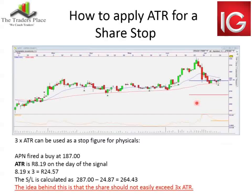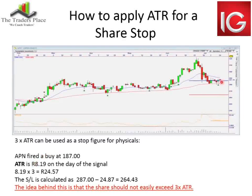Applying ATR on the physical side — we've got the moving averages in there. Average true range on shares is multiplied by three. The orange line tells me the average true range on the day the signal fired was 8.19. Aspen fired a buy signal at 137 rand. The ATR at that time was 8.19. Multiply that by three and it gives me a stop loss of 24.57 on the stock.